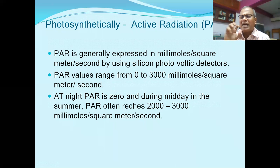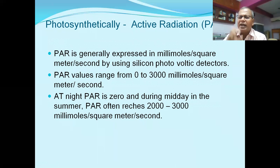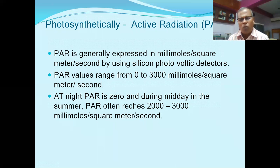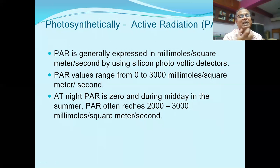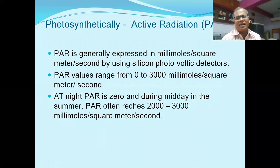The PAR power values range from zero to three thousand millimoles per square meter per second. At night, PAR is zero because there is no sunlight. At midday in summer, PAR reaches two thousand to three thousand millimoles per square meter per second.